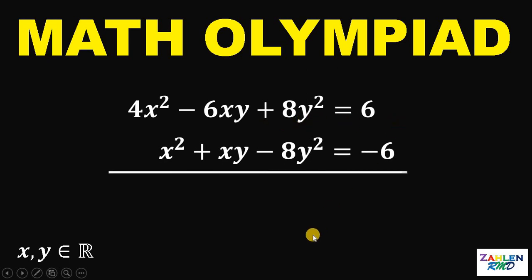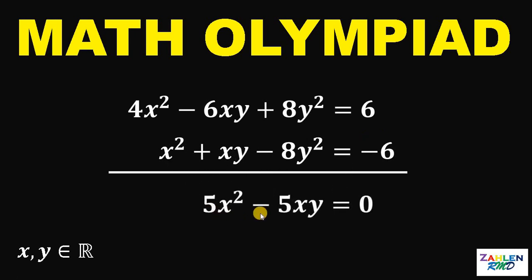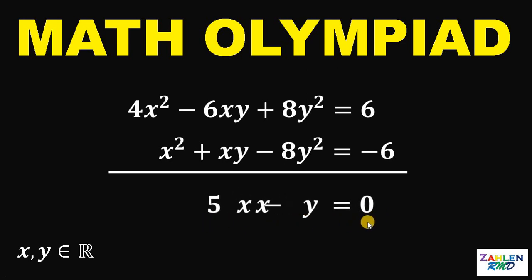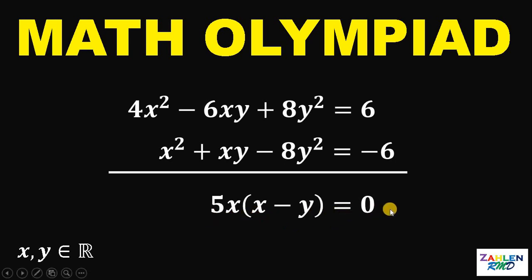If we add these two equations, the 8y squared and 6 terms cancel out. So if we do that, we have 5x squared minus 5xy equals 0. The good thing is we can factor out 5x from these two terms. If we do that, we get 5x multiplied by x minus y equals 0.